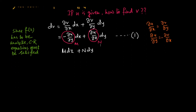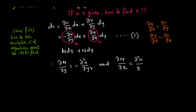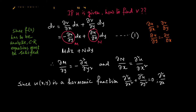The right-hand side of equation one is of the form M dx plus N dy, where M equals minus del u del y and N equals del u del x. Therefore, del M del y equals minus del²u / del y² and del N del x equals del²u / del x². Since u is given as a harmonic function, del²u / del x² plus del²u / del y² equals 0, which means del²u / del x² equals minus del²u / del y².